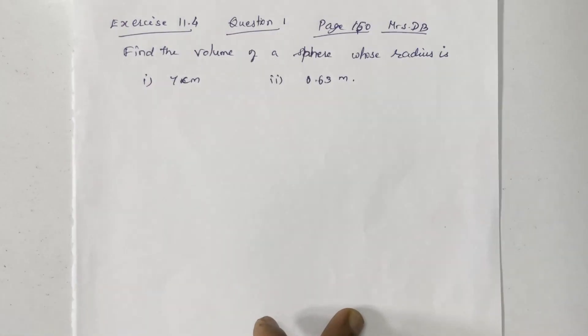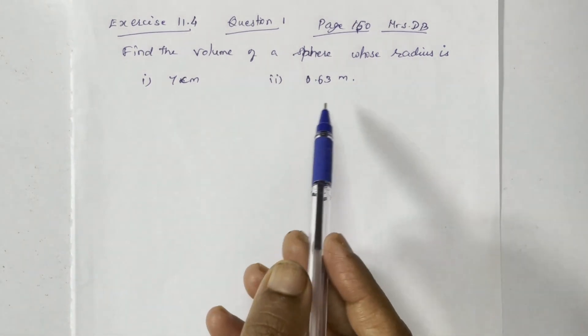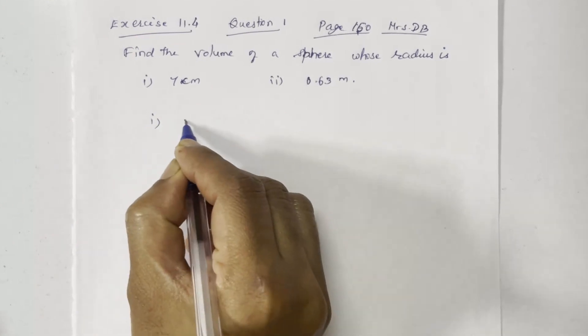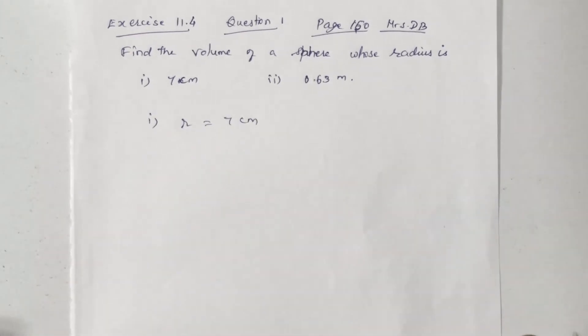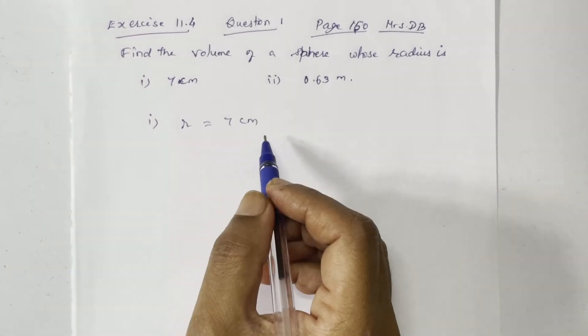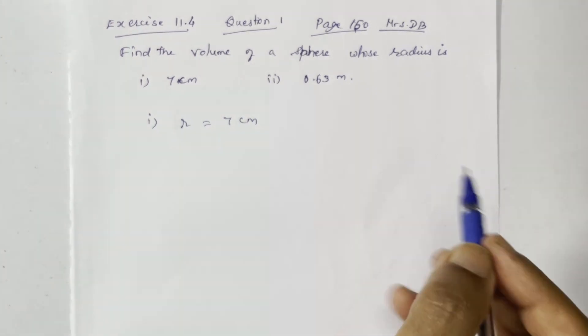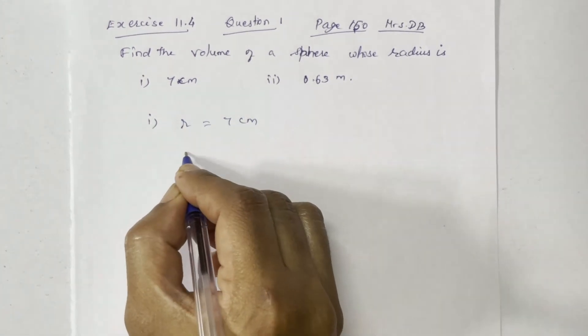Find the volume of a sphere whose radius is 7 cm. Second division, 0.63 m. So volume of a sphere formula is 4 by 3 pi r cube. R is given, so direct substitution.